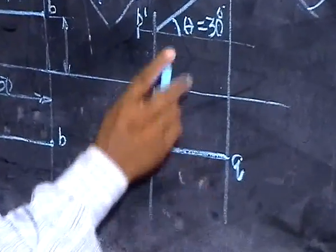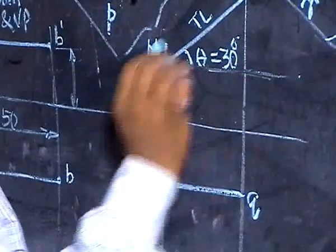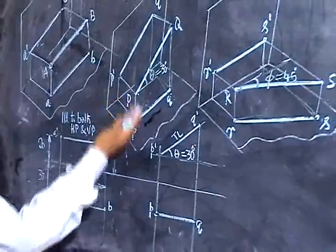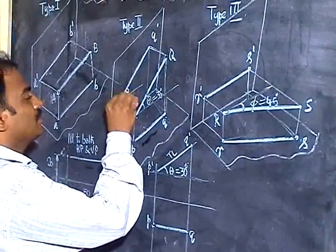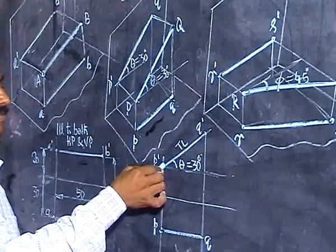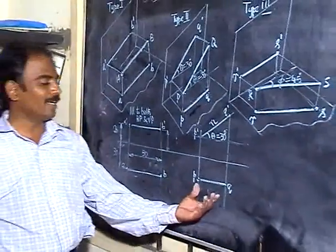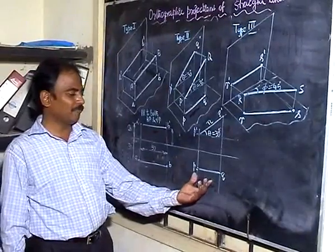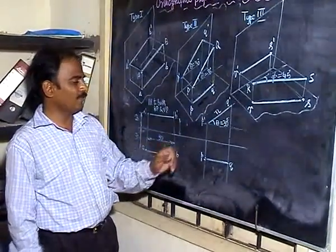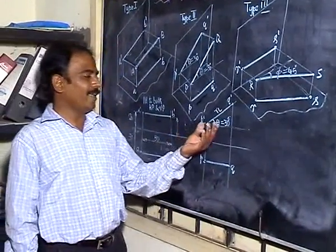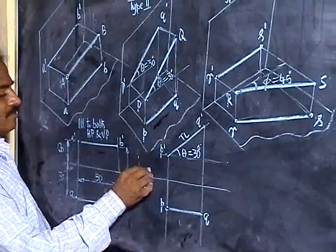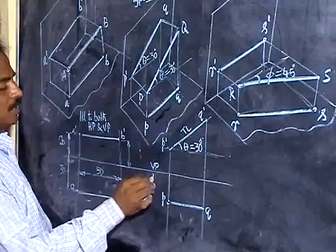One more thing: the line is inclined to HP, but the inclination is not available on HP — it is available only on VP. So if the straight line is inclined to HP, you should see the inclination only at VP. As long as it is parallel, you get the true length; when it is not parallel, you get only a reduced length. PQ is the top view, which relates to HP — so the line is inclined to HP. P'Q' is the front view and gives true length, so the line is parallel to VP.